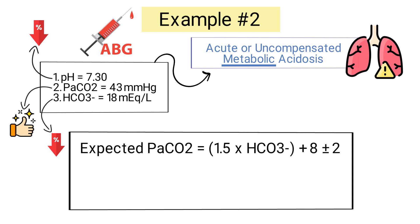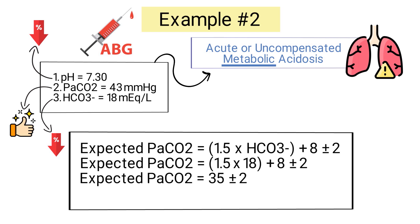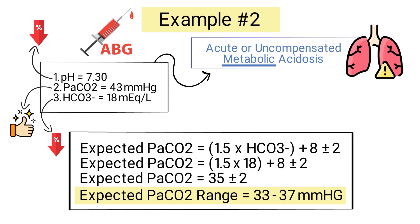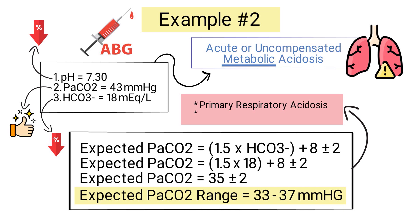Using Winter's formula: expected PaCO2 = 1.5 × 18 + 8 ± 2, which equals 35 ± 2. Therefore, the patient's expected PaCO2 range should be between 33 and 37. The patient's measured PaCO2 of 43 is higher than the expected range, indicating that the patient has primary respiratory acidosis in addition to metabolic acidosis.